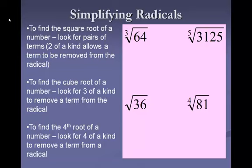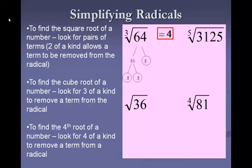When I break down 64 in a factor tree, since this is a cube root, that means I need 3 of a kind, and I have 3 fours here. They make a complete group, and so my answer would be 4.